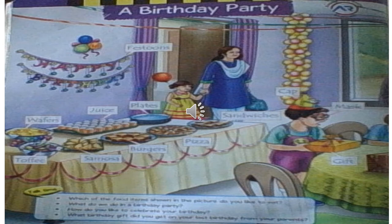She is happy to see all the eatables that have been laid down on the table. What can we see there? We can see juice, wafers, toffees, samosa, burger, pizza and sandwiches. What is it that you love to eat?